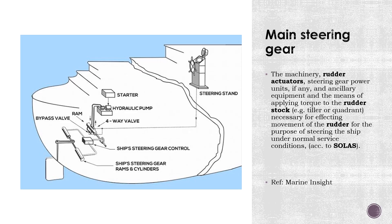Before going into the different types of steering gear, you must know the difference between main steering gear and auxiliary steering gear. The main steering gear comprises the machinery, rudder actuators, steering gear power units if any, ancillary equipment, and the means of applying torque to the rudder stock — for example, a tiller or quadrant — necessary for affecting movement of the rudder under normal service conditions.